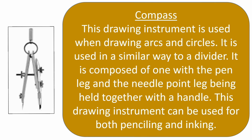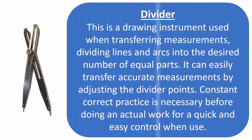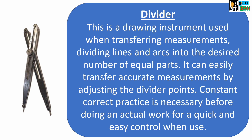Compass: this drawing instrument is used when drawing arcs and circles. It is used in a similar way to a divider, and is composed of a pen leg and a needle point leg held together with a handle. It can be used for both penciling and inking. Divider: this is a drawing instrument used when transferring measurements and dividing lines and arcs into the desired number of equal parts. It can easily transfer accurate measurements by adjusting the divider points. Constant correct practice is necessary before doing actual work for quick and easy control.